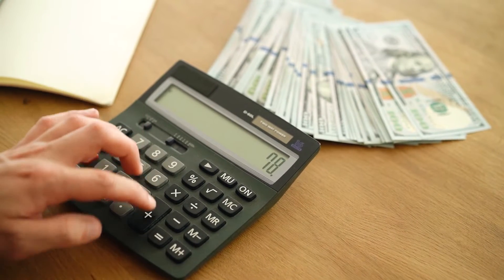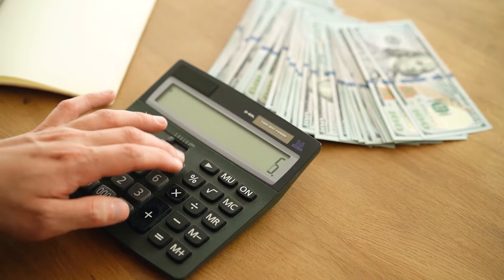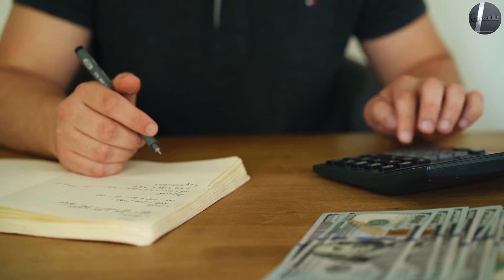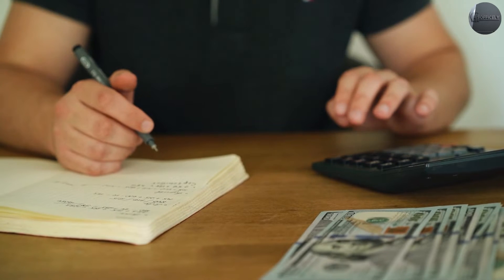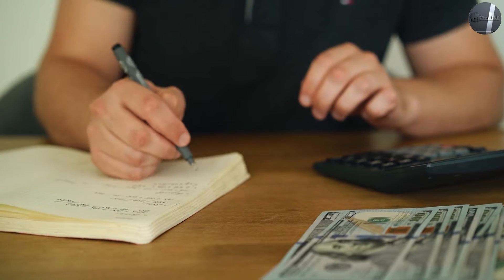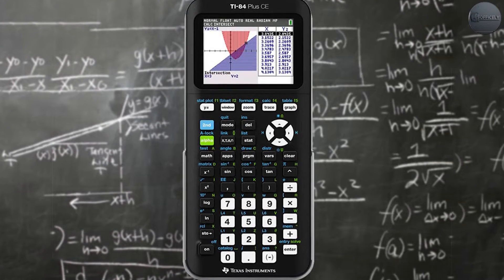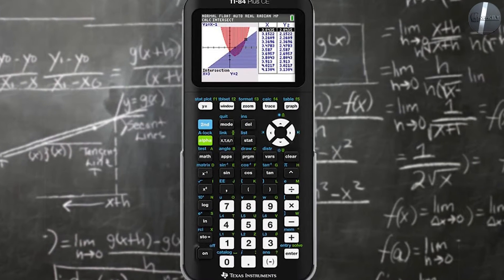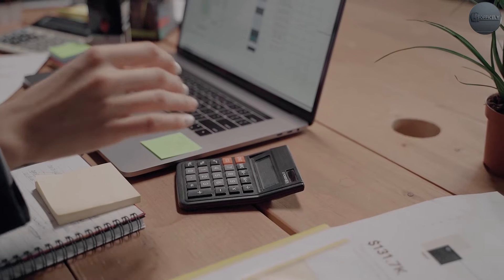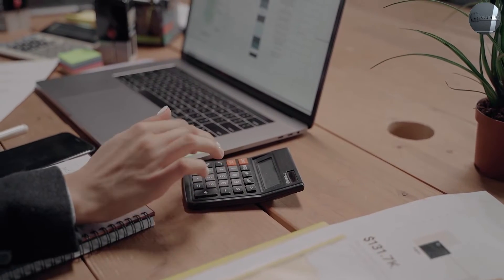If you look closely enough, there are a few things that might confuse you on a calculator. There are a bunch of different things you can do depending on the type—basic, scientific, graphing, etc.—you have. But there are two buttons that are almost confusingly similar: C and CE. So what's the difference between them?